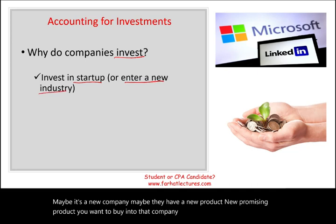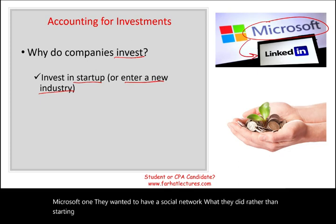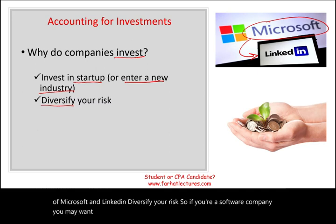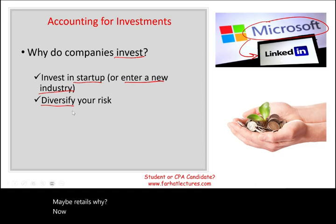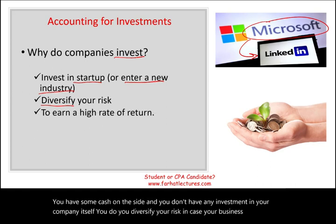Another reason is to enter a new market. For example, Microsoft, when they wanted to have a social network, rather than starting one, they bought LinkedIn. Another reason is to diversify your risk. If you're a software company, you may want to buy stocks in a construction company or retail — companies unrelated to you. Now you have some cash on the side, and you diversify your risk. In case your business went down, your investments will do well.